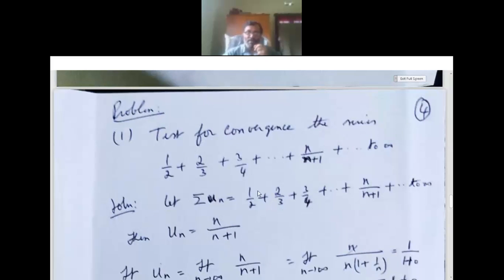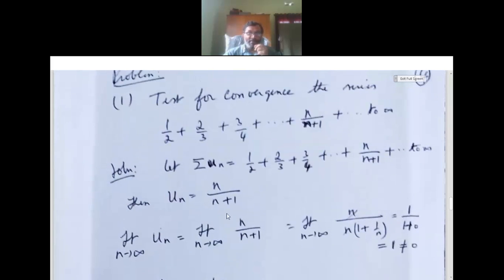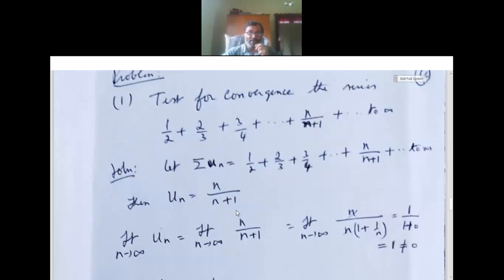In the numerator you can see 1, 2, 3, ... n terms, and in the denominator the first term is 2, the second is 3, the third is 4, so the nth term is n/(n+1). So un equals n/(n+1). To test convergence, we use the necessary condition: we have to find limit n tends to infinity un.